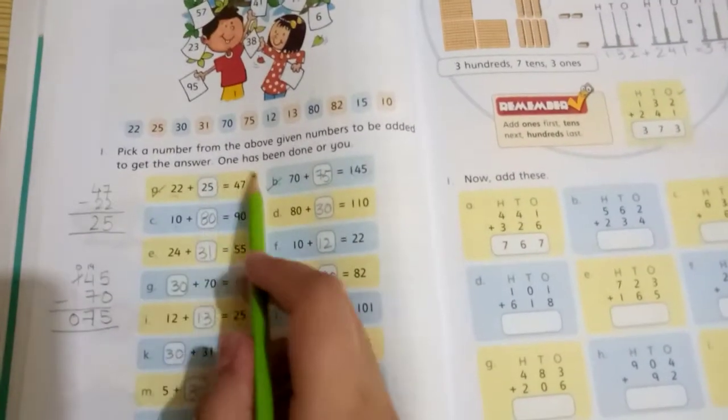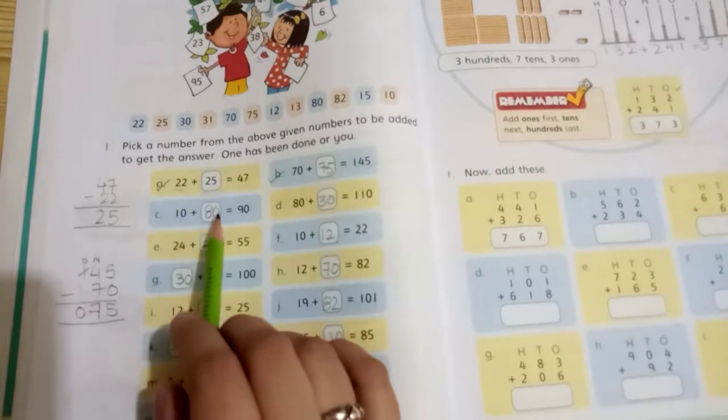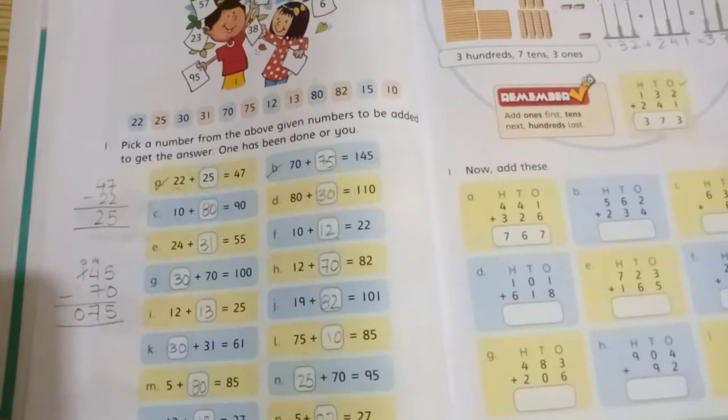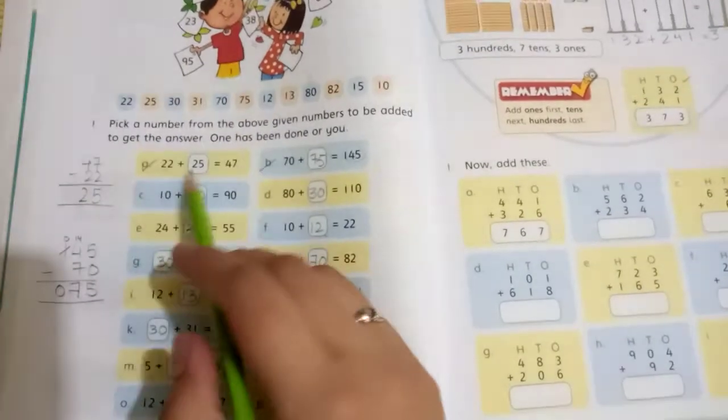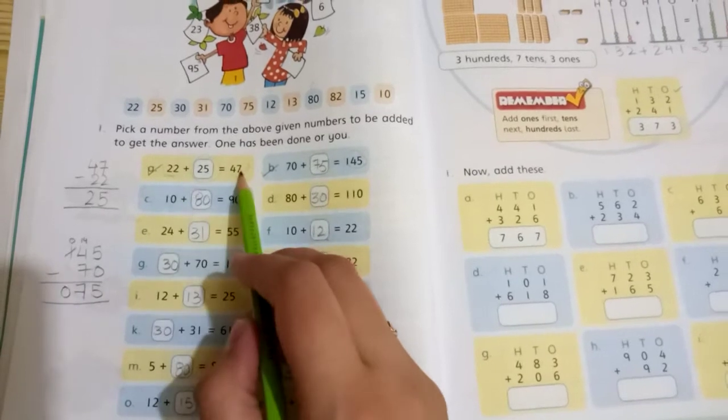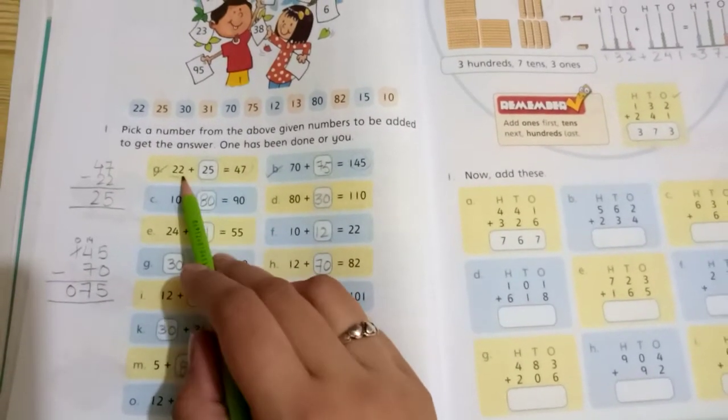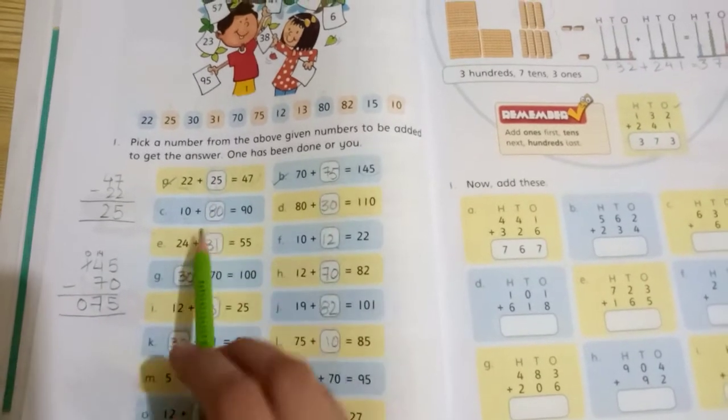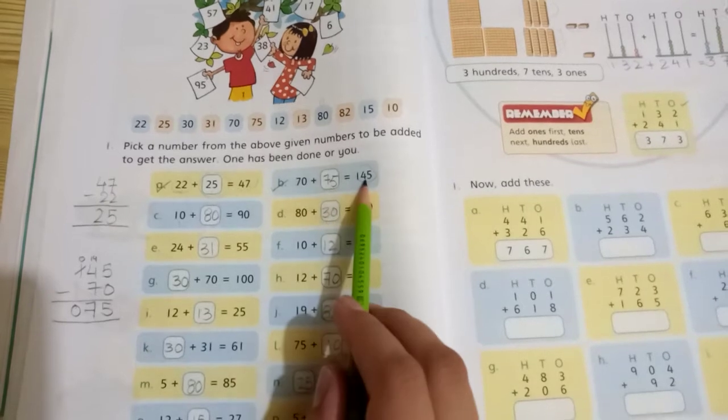Which is greater, that's the correct answer. You can cut the number from above. For example, the first one: we have 47 and 22. Which is greater? This is the answer. We have to take away and find. 47 minus 22, then 25, and the answer is 25.